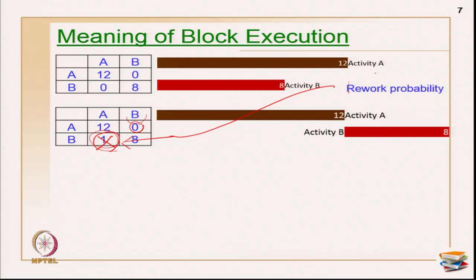If you look at the 0 value here - as a result of any change in B, A will never repeat because I have given 0% probability. Zero implies it never repeats; 1 implies 100% repeats. Suppose if I give 0.1 as my value, as a result of any change in B there is a 10% probability that A repeats. If 0.2, there is a 20% probability that A will repeat - that is how it has to be interpreted.